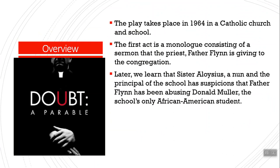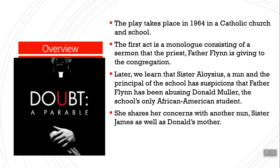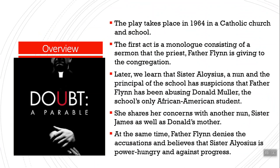Sister Aloysius — a nun and the principal — shares her concerns with Sister James, another teacher at the school who is Donald's teacher. She's quite young and this is her first job. She also shares them with Donald's mother, Mrs. Mueller. At the same time, Father Flynn is denying the accusations and he believes that Sister Aloysius is power hungry and against the progress that he is trying to bring into the church.